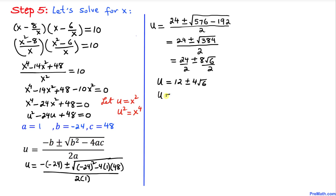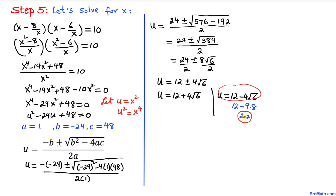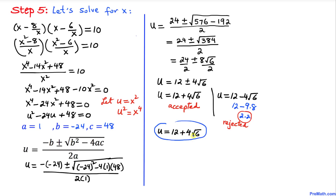So u equals 12 plus 4√6 or u equals 12 minus 4√6. If we evaluate the second value, we get approximately 2.2, which is not realistic for this problem. So we reject that value and accept u equals 12 plus 4√6. Substituting back with u equals x², we get x² equals 12 plus 4√6.